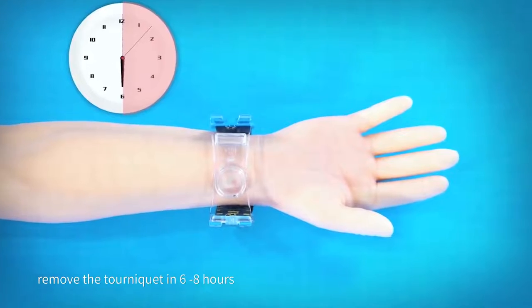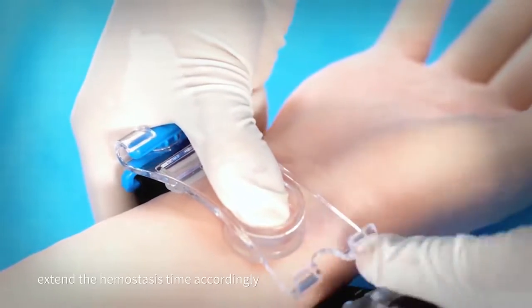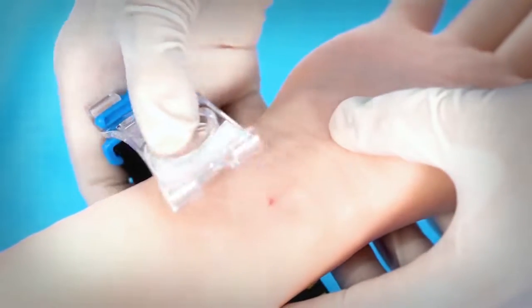Remove the tourniquet in six to eight hours. If the patient's coagulation function is poor, extend the hemostasis time accordingly.